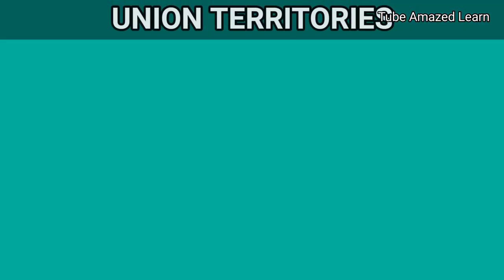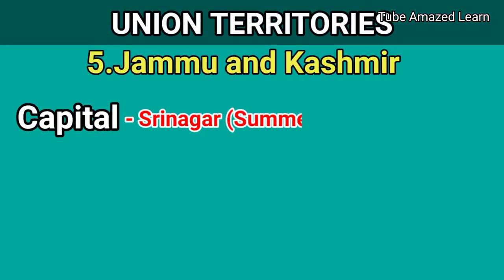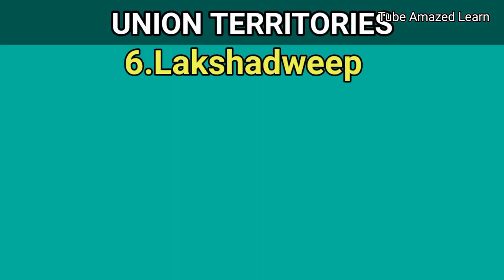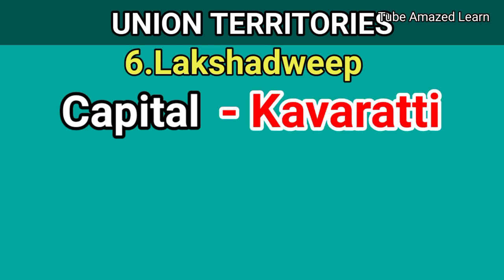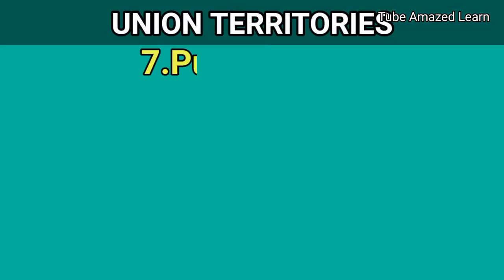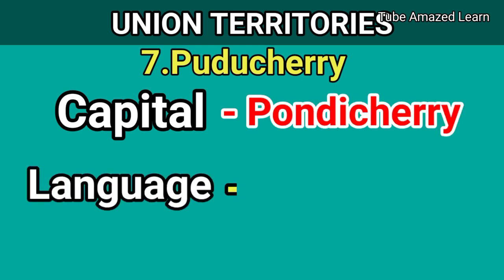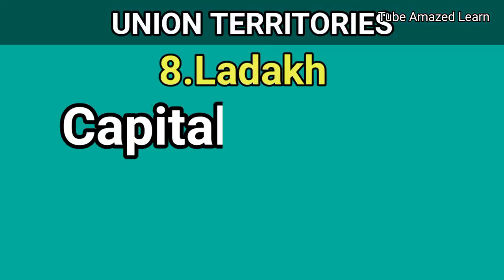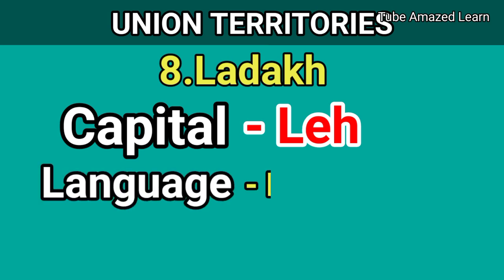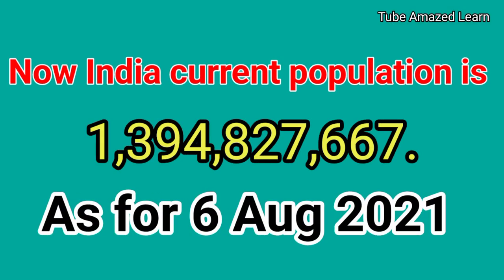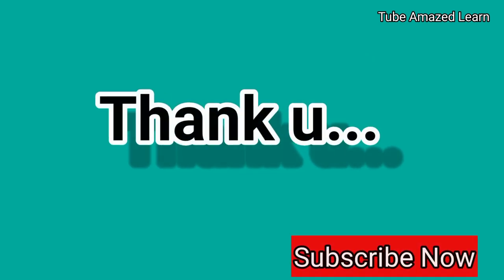5. Jammu and Kashmir — capital Srinagar (summer) and Jammu (winter), language Kashmiri. 6. Lakshadweep — capital Kavaratti, language Malayalam. 7. Puducherry — capital Pondicherry, language Tamil. 8. Ladakh — capital Leh, language Ladakhi. India's current population is approximately 139 crore.